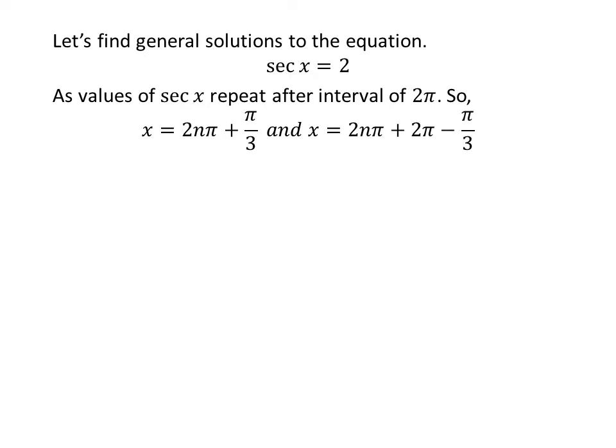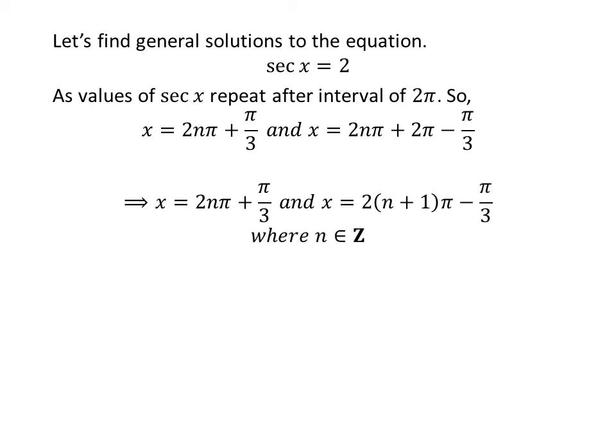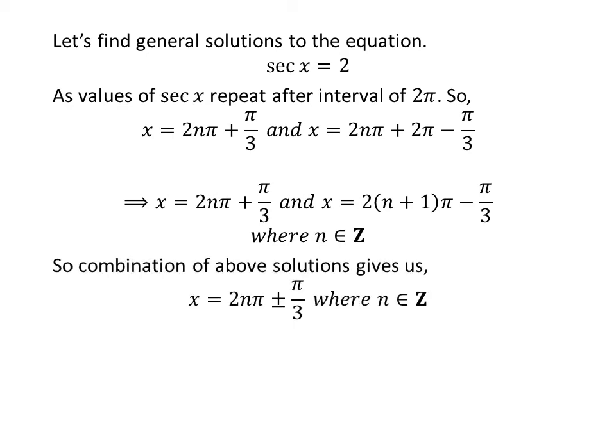Now let us find the general solutions for the equation secant of x is equal to 2. Since the values of secant of x repeat after the interval of 2 times pi, the general solutions are 2n times pi plus pi upon 3 and 2n times pi plus 2 times pi minus pi upon 3, where n is an integer. Further simplification gives 2n times pi plus pi upon 3 and 2n plus 1 times pi minus pi upon 3. Combining these, the general solution is 2n times pi plus or minus pi upon 3, where n is an integer.